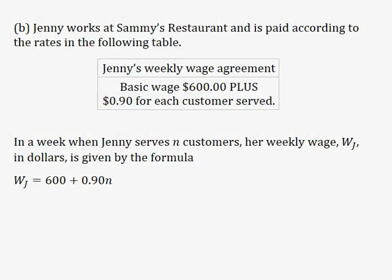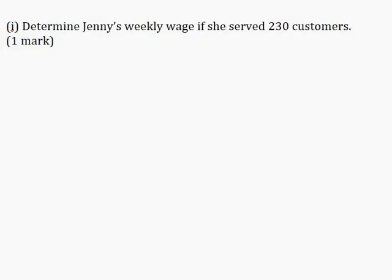Part B. Jenny works at Sammy's Restaurant and is paid according to the rates in the following table — Jenny's weekly wage agreement. Basic wage: $600 plus $0.90 for each customer served. In a week when Jenny serves N customers, her weekly wage WJ in dollars is given by the formula: WJ = 600 + 0.90N.